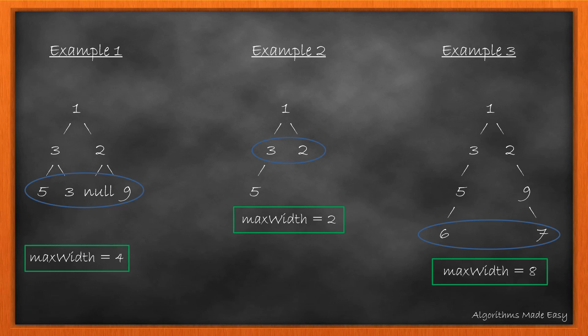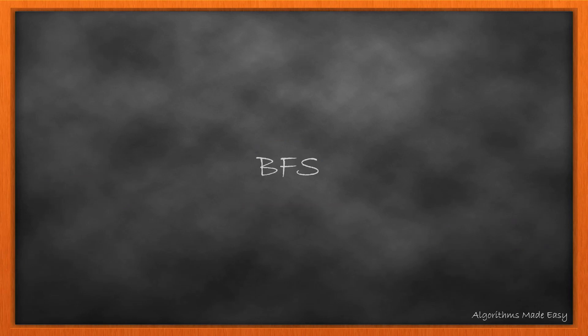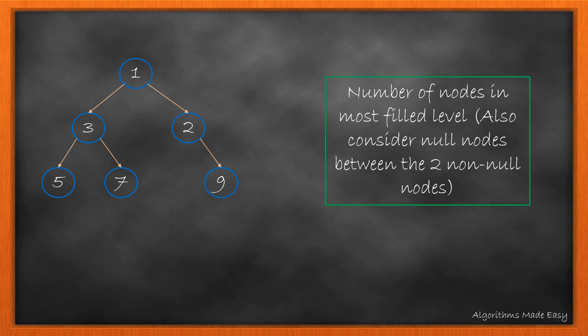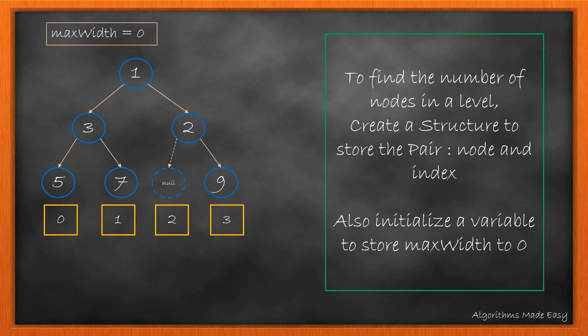This can be achieved by using either BFS or DFS. Let's first go through the BFS. Let's take this tree as an example. We need to find the number of nodes in most densely filled level while considering the null nodes between the edge nodes too. If we index the nodes, we can see that we have 4 nodes in the last level. To achieve this, we would need a data structure that will store a pair of tree node and index. We will also need a variable to keep track of max width.